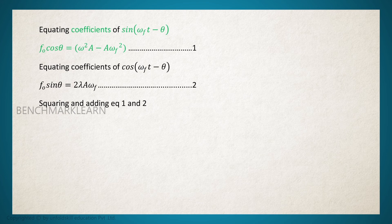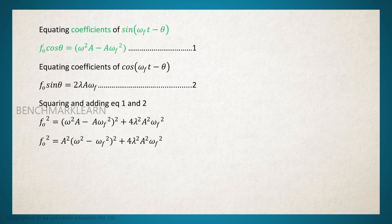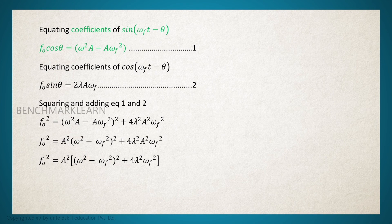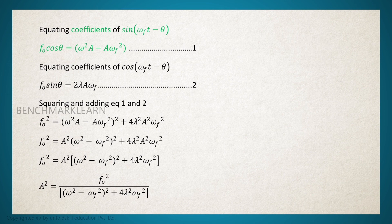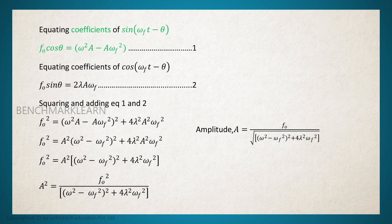Squaring and adding the two equations, we get: f₀² equals (omega² a minus a omega_f²)² plus 4 lambda² a² omega_f², which simplifies to f₀² equals a² times [(omega² minus omega_f²)² plus 4 lambda² omega_f²]. Therefore, the amplitude is given by: a equals f₀ divided by the square root of [(omega² minus omega_f²)² plus 4 lambda² omega_f²].